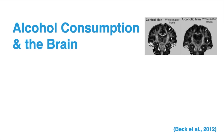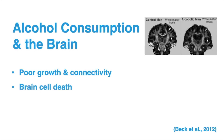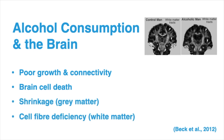Research conducted by Beck and colleagues demonstrated significant effects of alcohol consumption with respect to the brain. First, alcohol can disrupt the growth and connectivity of new and old brain cells. Alcohol was also found to destroy brain cells by restricting their access to energy. Furthermore, chronic drinking over a period of 10 years can lead to brain shrinkage and fiber deficiency.